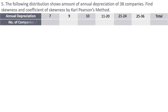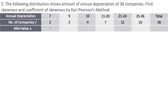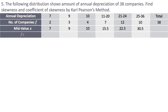The frequency given is number of companies: 2, 3, 4, 7, 12, 10 — total 38, as already mentioned in the question. Now the first thing we need to do is calculate the mid values x. For discrete values I will write down the mid values as they are: 7, 9, and 10. For the continuous values I add the lower and upper limits and divide by 2: (11+20)/2 = 15.5, (21+24)/2 = 22.5, (25+36)/2 = 30.5.